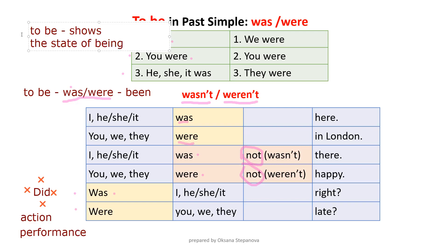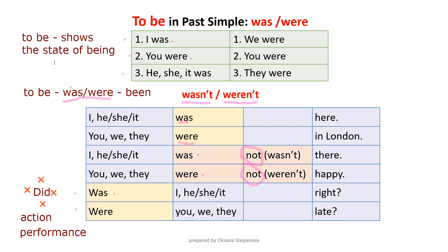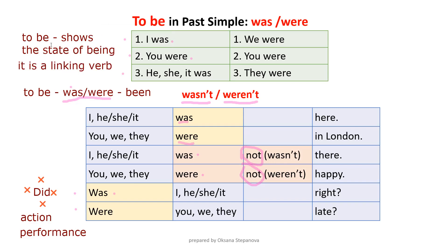The verb 'to be' shows the state of being. It is also a linking verb — it links ideas together. The verb 'to be' never expresses an action or performance, and that is why it cannot be used together with 'did', or have 'did' used instead of 'was'.